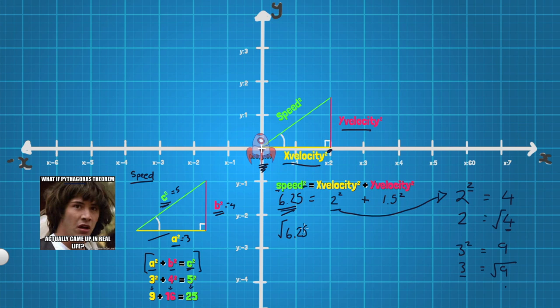So to find our speed, we want to find what the square root of 6.25 is. And the calculator tells me that that number is 2.5. So 2.5 is our speed and our speed is just the length of the hypotenuse. So we can just slightly modify our formula and turn it into speed is equal to the square root of the x velocity squared plus the y velocity squared. All we've done to get rid of the square here is take the square root of speed. Whatever we do to one side, we need to do to the other side.